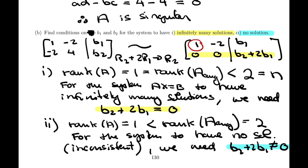The possibility of having just one solution is not available here — because the matrix is not invertible. When we reduced A, we did not get the identity matrix, confirming A is not row equivalent to I, and therefore not invertible. The linear system cannot have just one solution. All of these statements are what we call equivalent statements, and we're going to prove that in the Invertible Theorem.